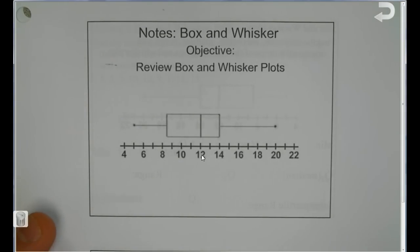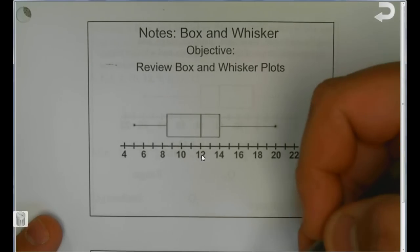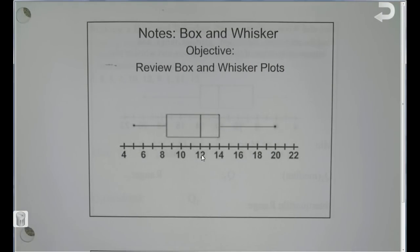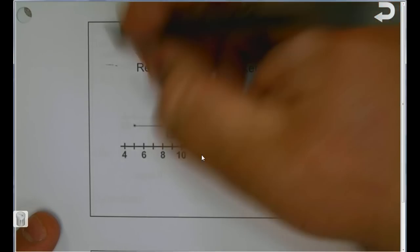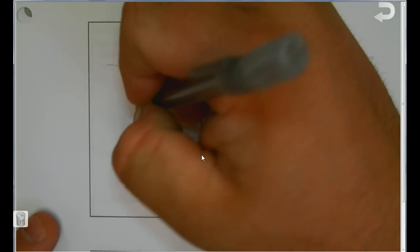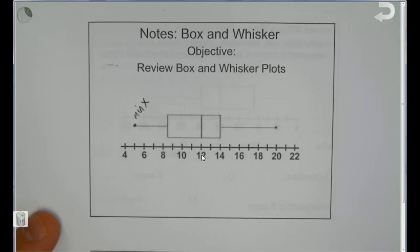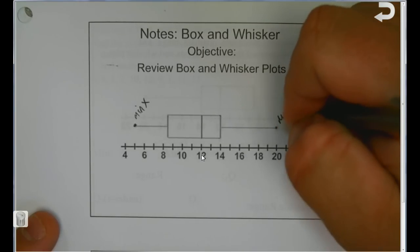I'm going to keep this on screen while filling out the next slide as we go. The lower extreme is the minimum value — that's our min X, and we call that the lower extreme. It's this point right here. The upper extreme is the maximum value, so we have max X right here.